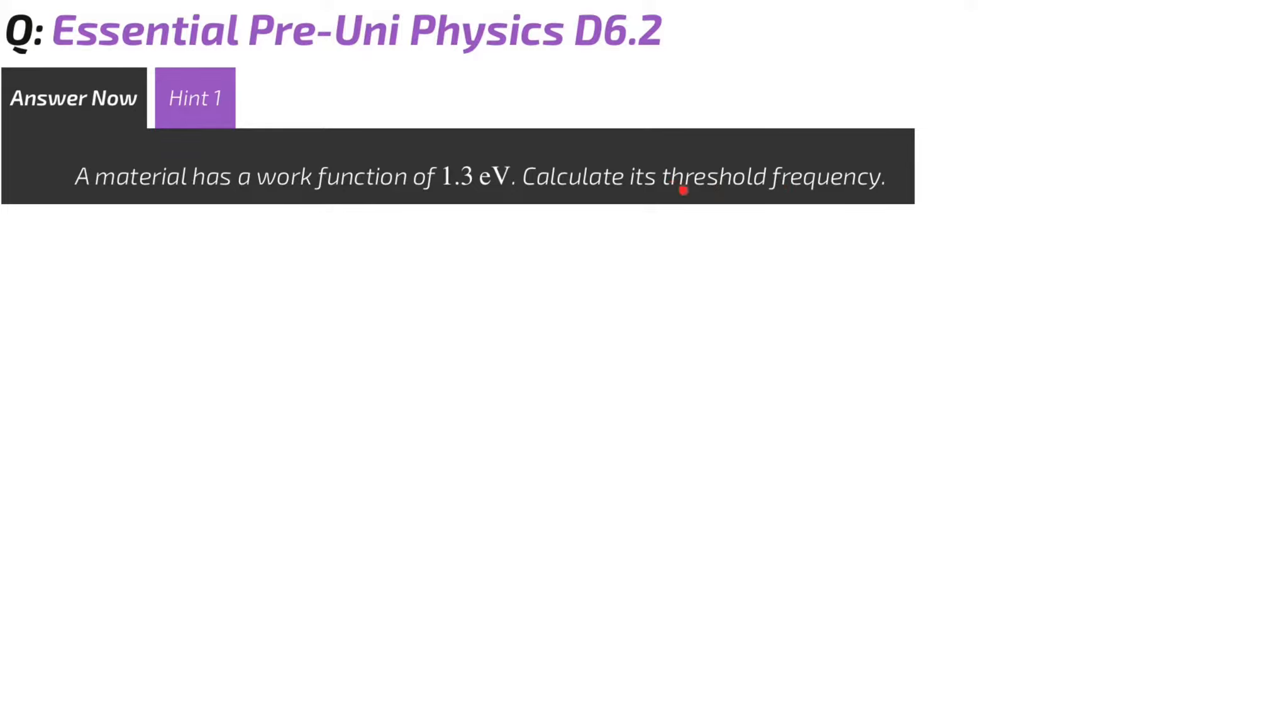The threshold frequency is the frequency of light, the minimum frequency of light you need to give you that much energy, which is the amount of energy that will emit a photoelectron.